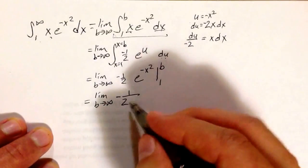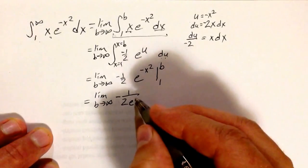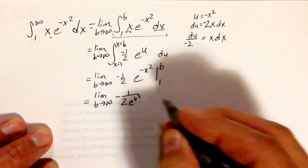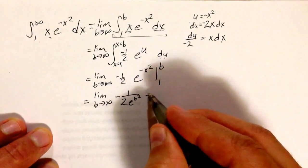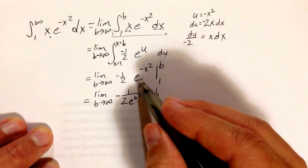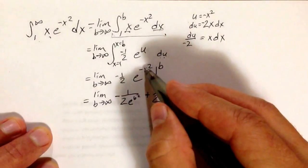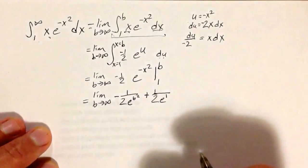Now, notice a negative exponent means it's in the denominator. So we get 1 over 2 e^(b²), minus negative 1 half, and e^(-1) becomes e to the 1 in the numerator.